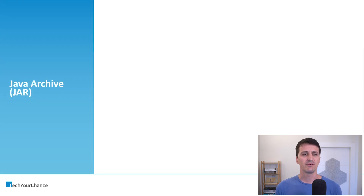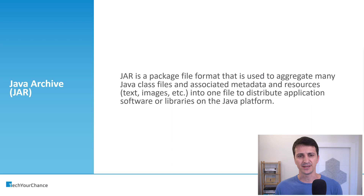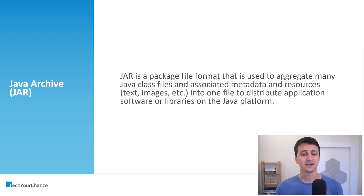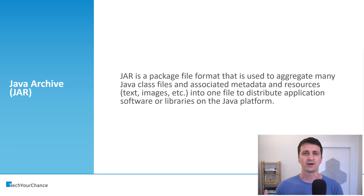The first one is Java Archive, just JAR. JAR is a package file format that is used to aggregate many Java class files — the compiled Java files and associated metadata and resources like text, images, etc. — into one file to distribute application software or libraries on the Java platform. JAR is something Android inherited from the Java world, used to distribute Java applications or libraries.